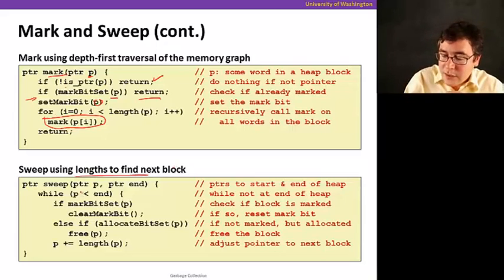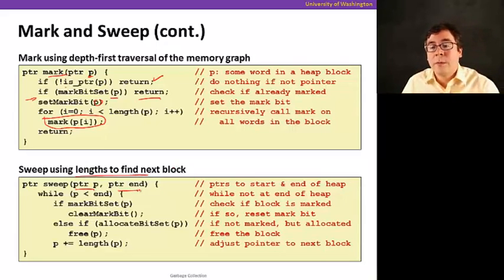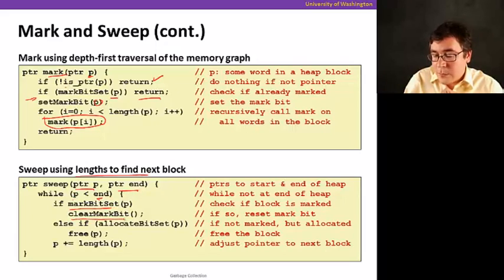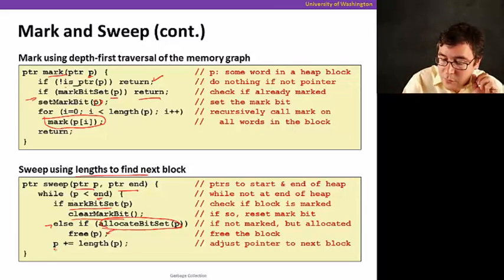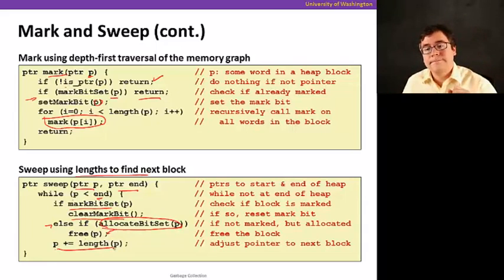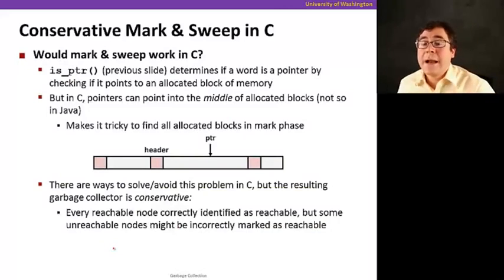Now, sweep is going to use lengths to find the next block. So we're going to start with p, and we know where it ends. So while p has not reached the end, if the mark bit is set, we clear the mark bit. Now, if the allocated bit is set, but if it's not marked, and the allocated bit is set, we're going to go and free, because we know it's allocated, but it's not marked. It means it's not reachable. Great. So now we're going to go to the next pointer by just adding length. That's pretty cool. Pretty simple.